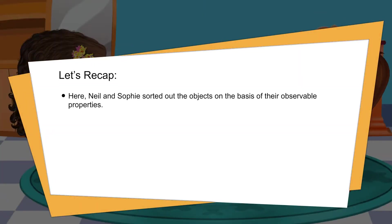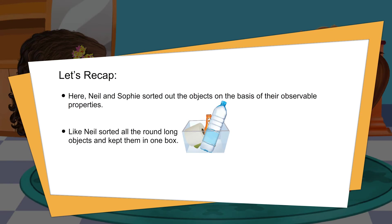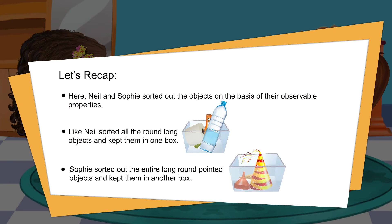Let's recap. Neil and Sophie sorted out the objects on the basis of their observable properties. Neil sorted all the round, long objects and kept them in one box. Sophie sorted out the long, round pointed objects and kept them in another box.